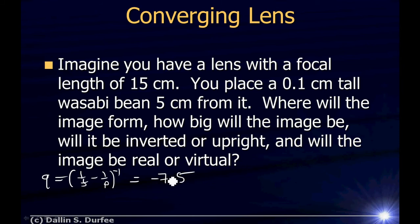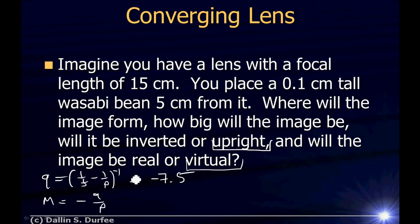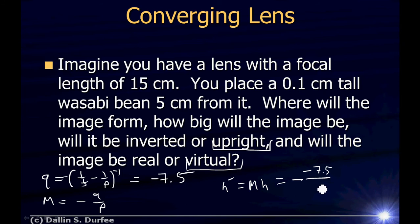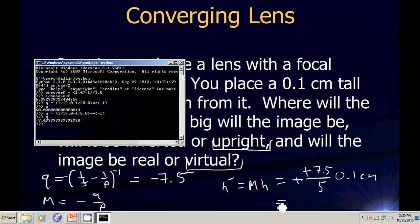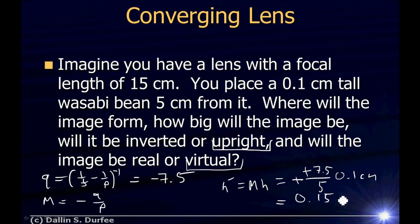Q is negative, so it's a virtual image. Since P is positive and Q is negative, magnification is positive — the image will be upright, not inverted. The image height is negative negative 7.5 over 5, all times 0.1 centimeters. The negative signs cancel and we get 0.15 centimeters tall. So the image is virtual, upright, and 0.15 centimeters high.